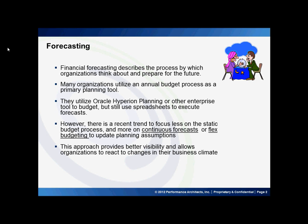Forecasting in the most general terms is the process by which organizations prepare for the future. Many organizations use the annual budget process as a tool to do this. They use Hyperion Planning or some other enterprise tool to do the budget, but still consider forecasts to be secondary and build them infrequently using spreadsheets and other desktop tools. However, more and more organizations are beginning to focus less on the static budget and more on continuous forecasting methods, which provides better visibility in preparing for the future.